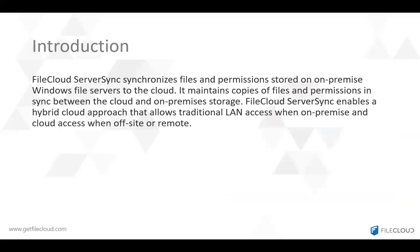FiCloud server sync is an application developed by FiCloud. It synchronizes files and permissions stored on a Windows file server to a FiCloud server, which can be in the cloud or on your own data center. It maintains copies of the files and permissions in sync between the cloud and the on-premises storage. FiCloud server sync enables a hybrid approach: local users access data traditionally using UNC path or as an SMB share, and off-site users access data through FiCloud team folder.